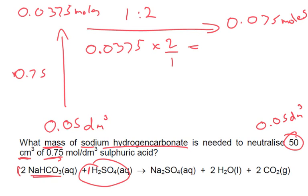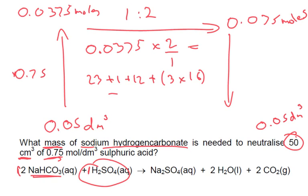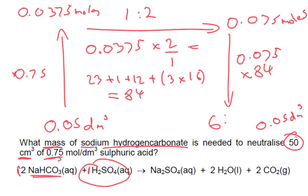Lastly, we want the mass. The molar mass of sodium hydrogen carbonate: sodium is 23, hydrogen is 1, carbon is 12, and oxygen — we've got 3 of them — is 3 times 16. So 23 plus 1 plus 12 plus 48 gives a molar mass of 84. Finally, 0.075 times 84 gives us the final mass — we need 6.3 grams. That's our final answer.